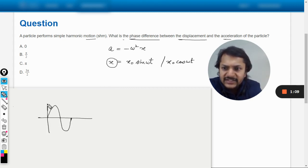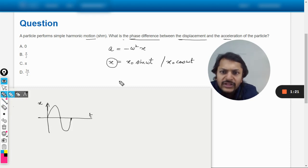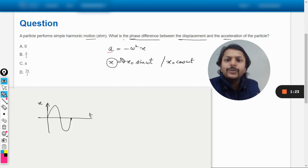Like this, if this is the variation for the displacement with respect to time, so how will the acceleration be there? Or I can show the acceleration in the same graph with a different color now. So you see how will I be showing that?